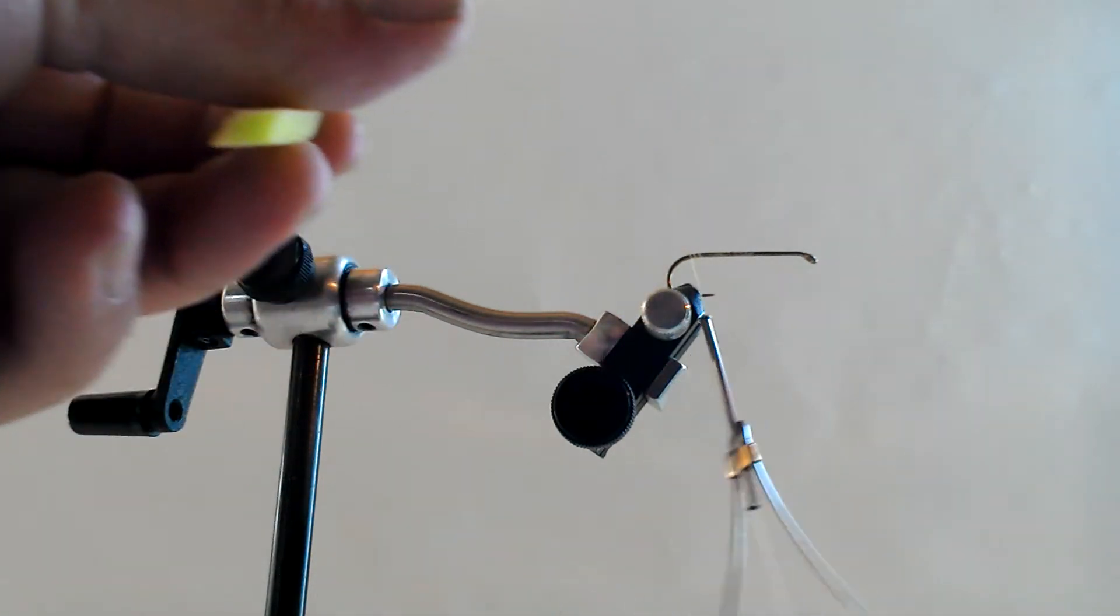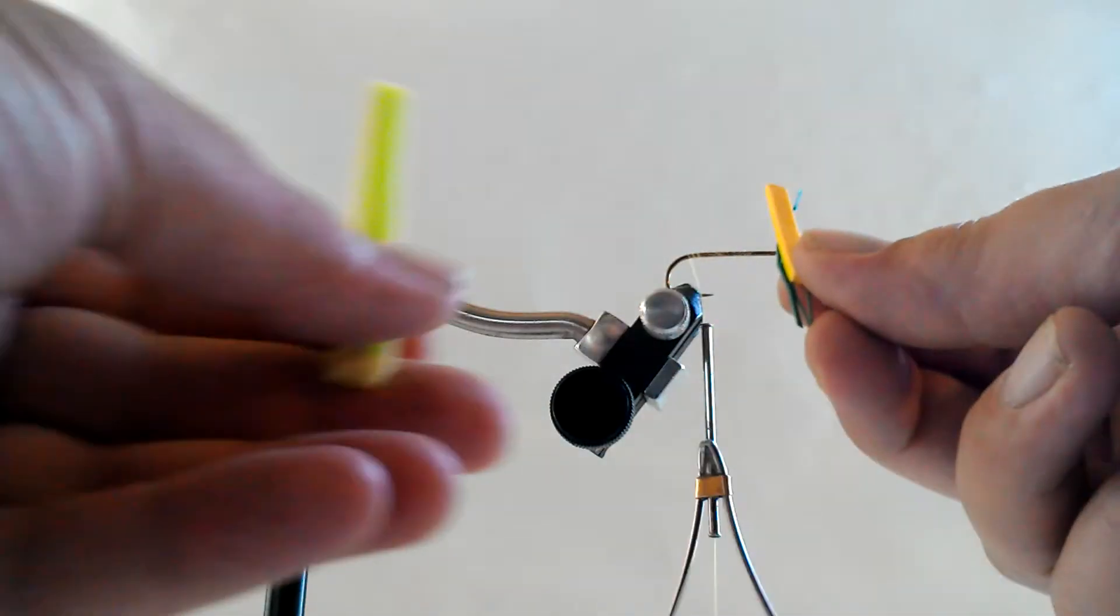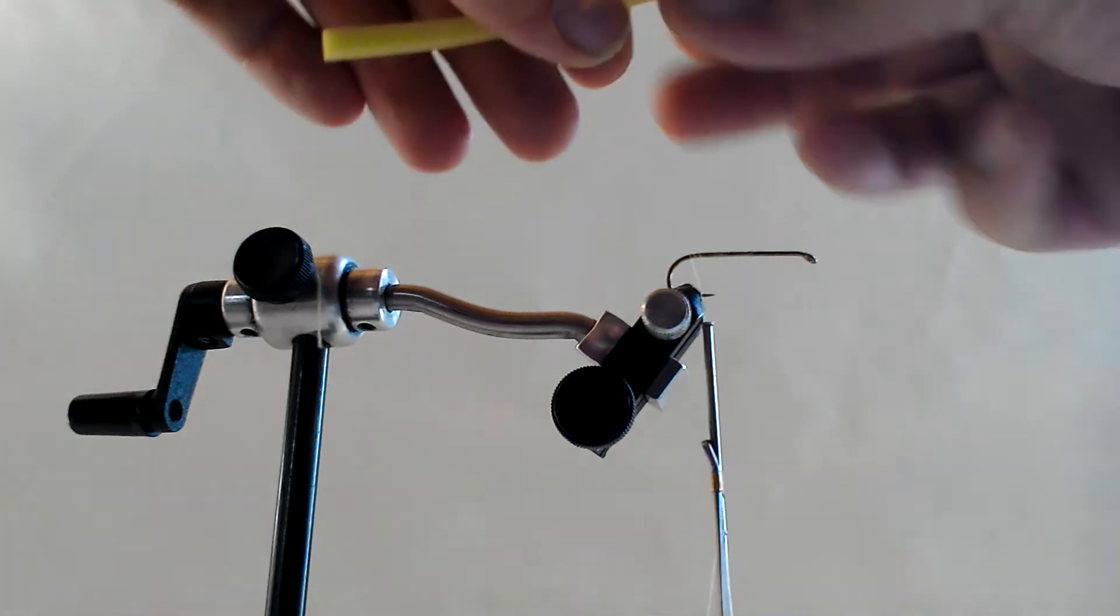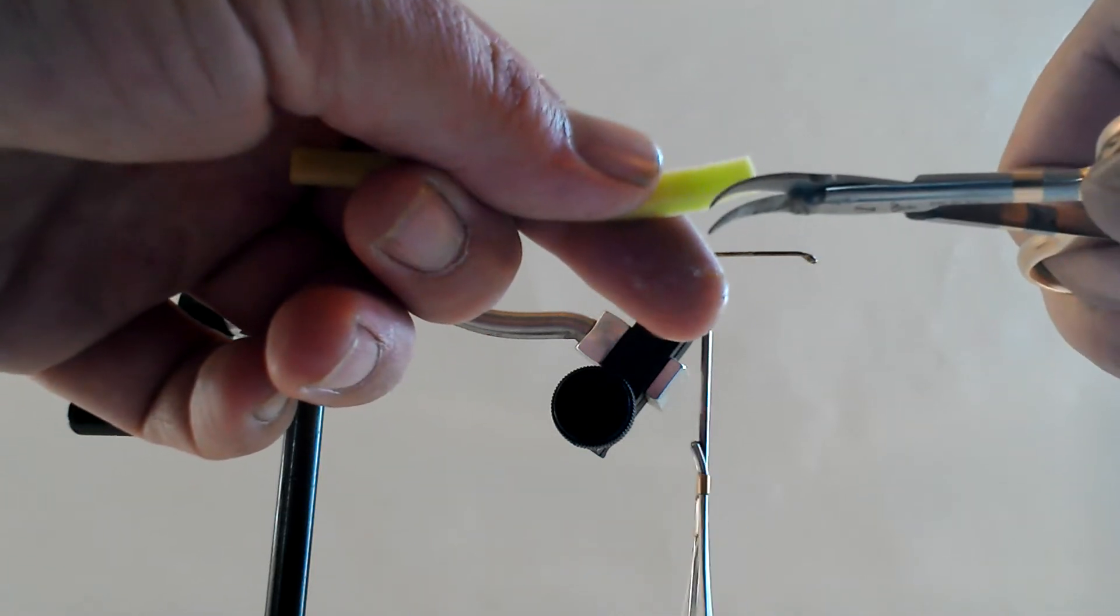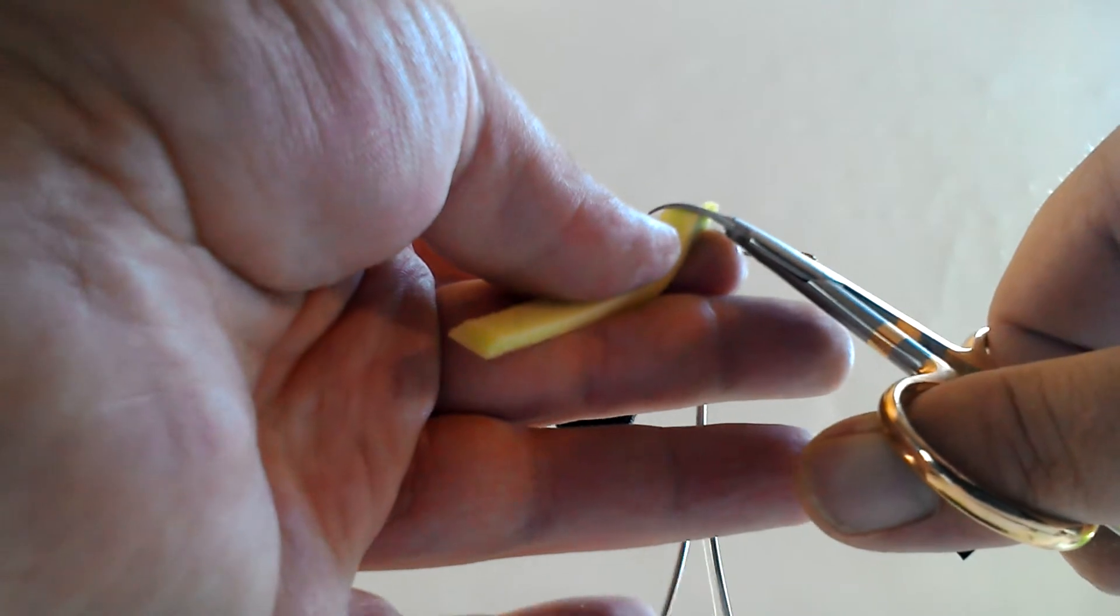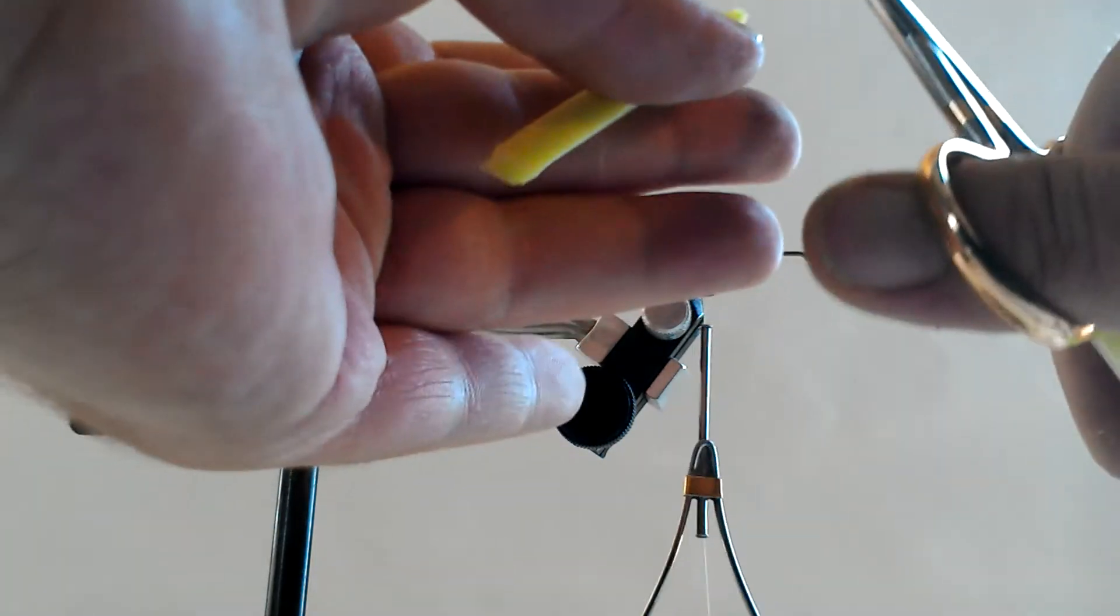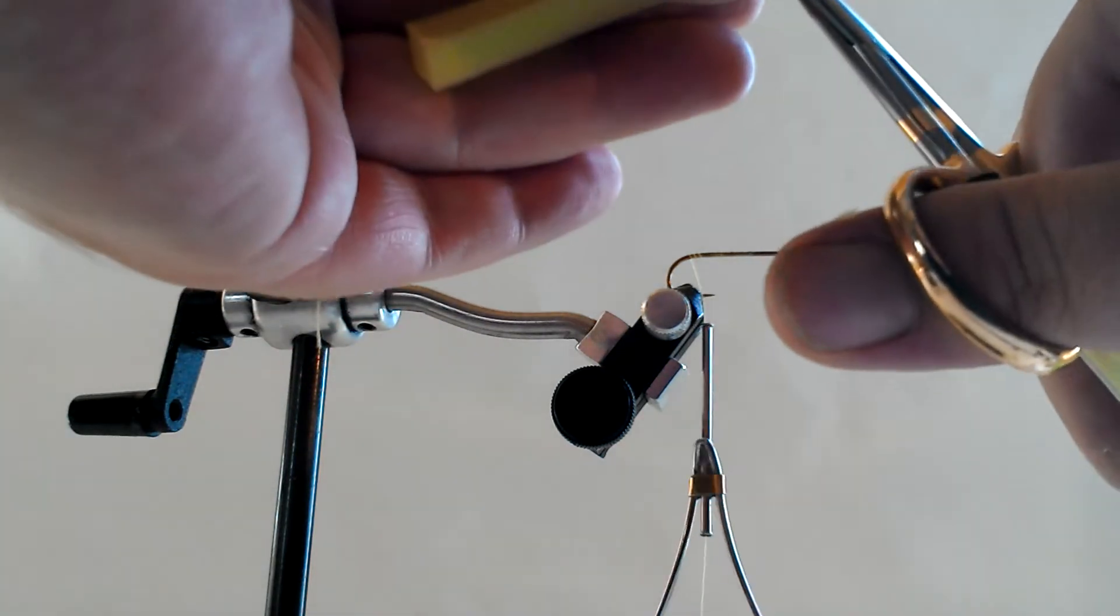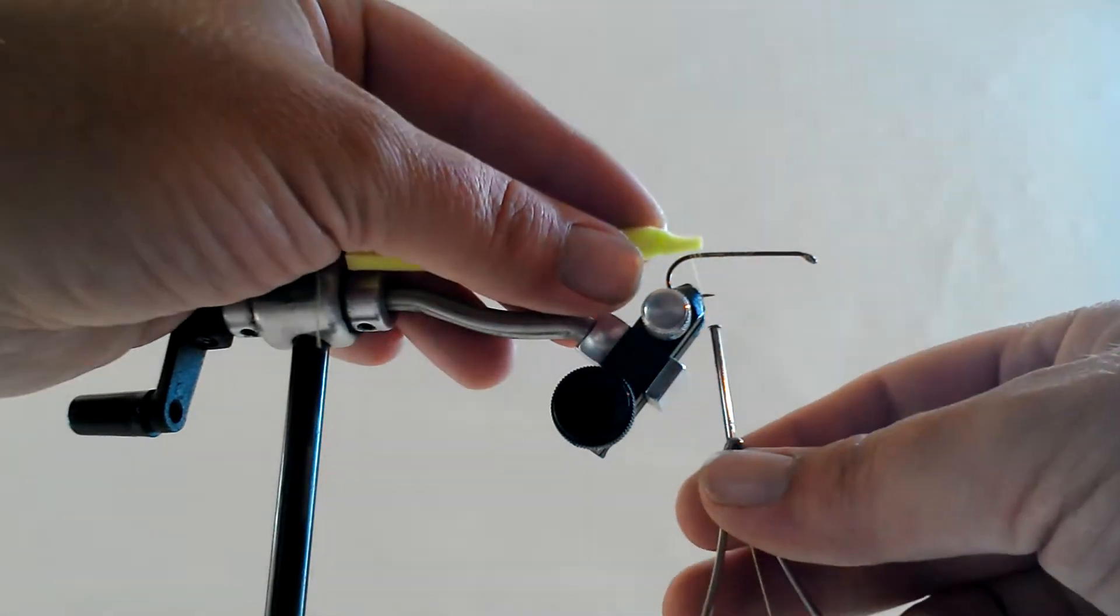Now I have some strips of foam. I cut them out previously. I've got this one, and I've got some yellow foam. So now I will take my scissors, cut a taper into my foam.